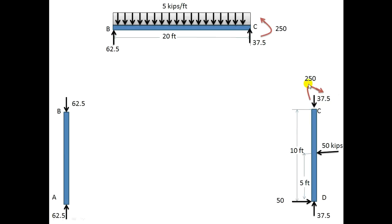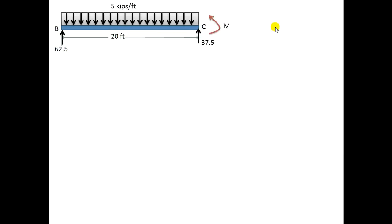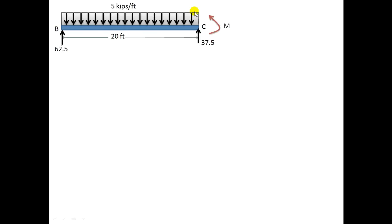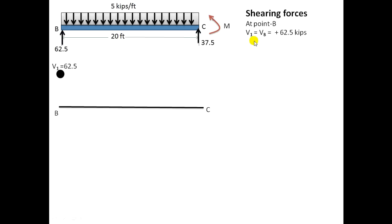This M equal to 250 kN·m can also be verified by taking moments at point B or C. Now I will draw the SFD and BMD. Start the SFD from the left side — V1 at point A is equal to the reaction at A, which equals 62.5 kN.